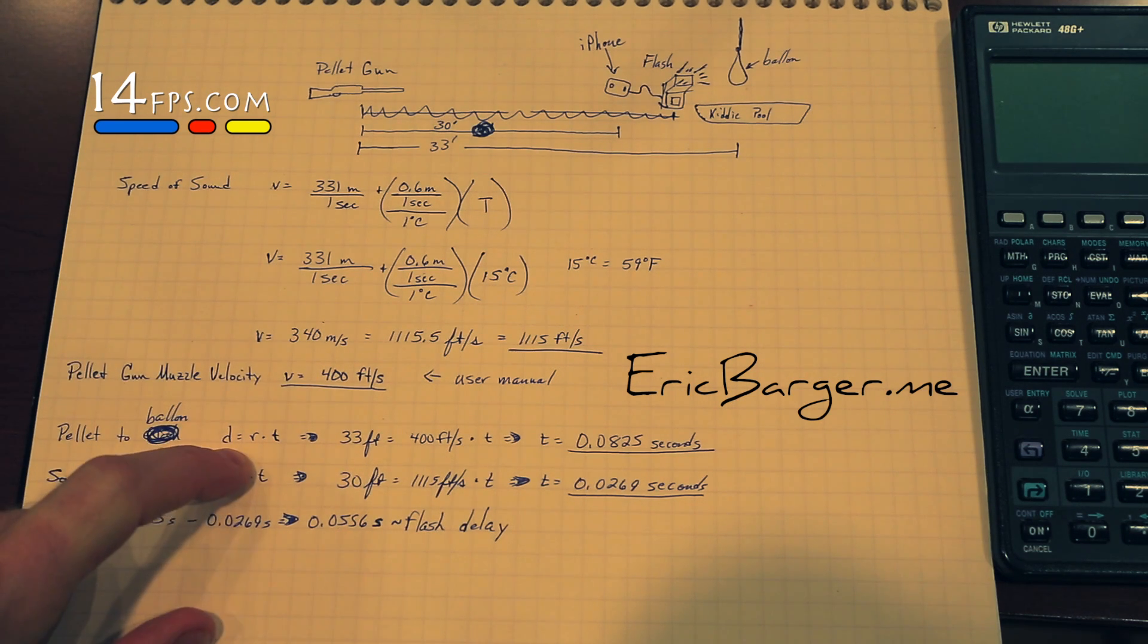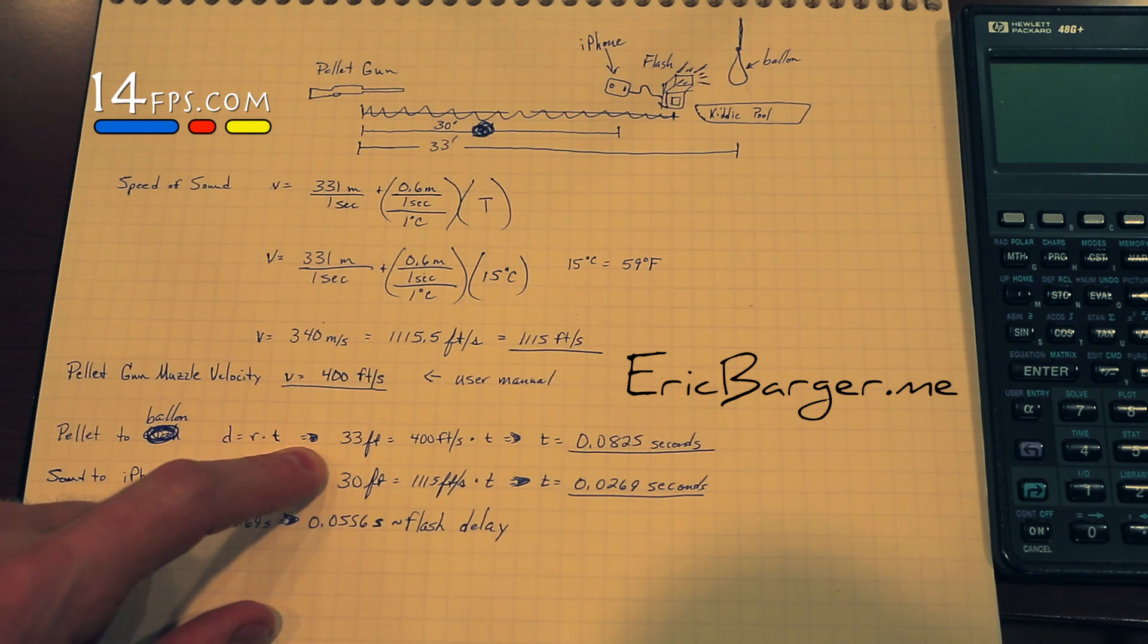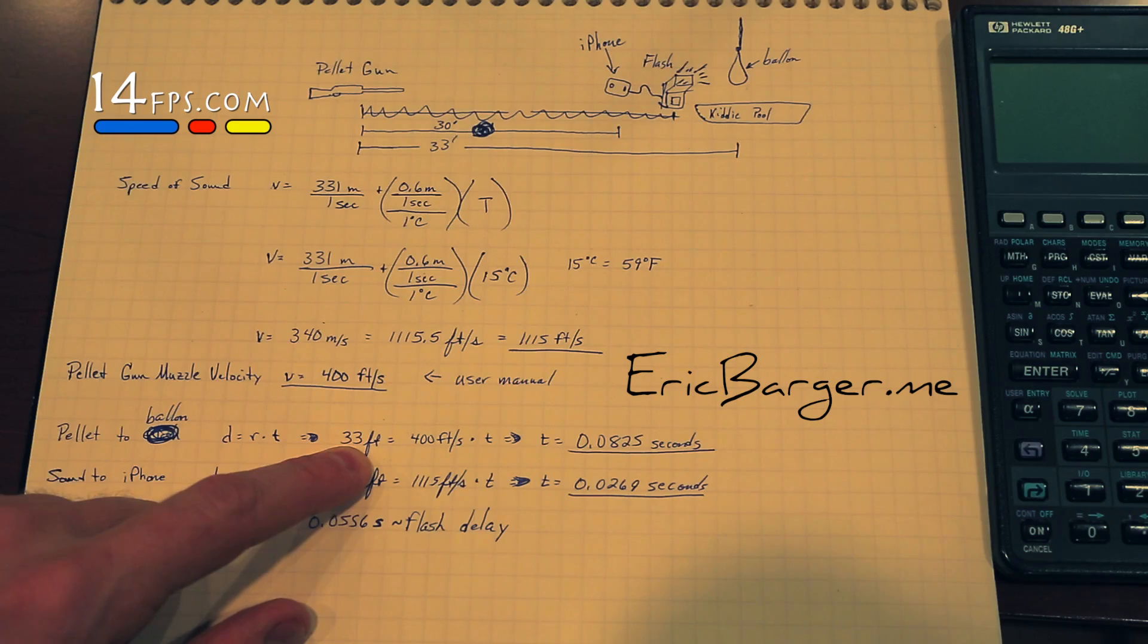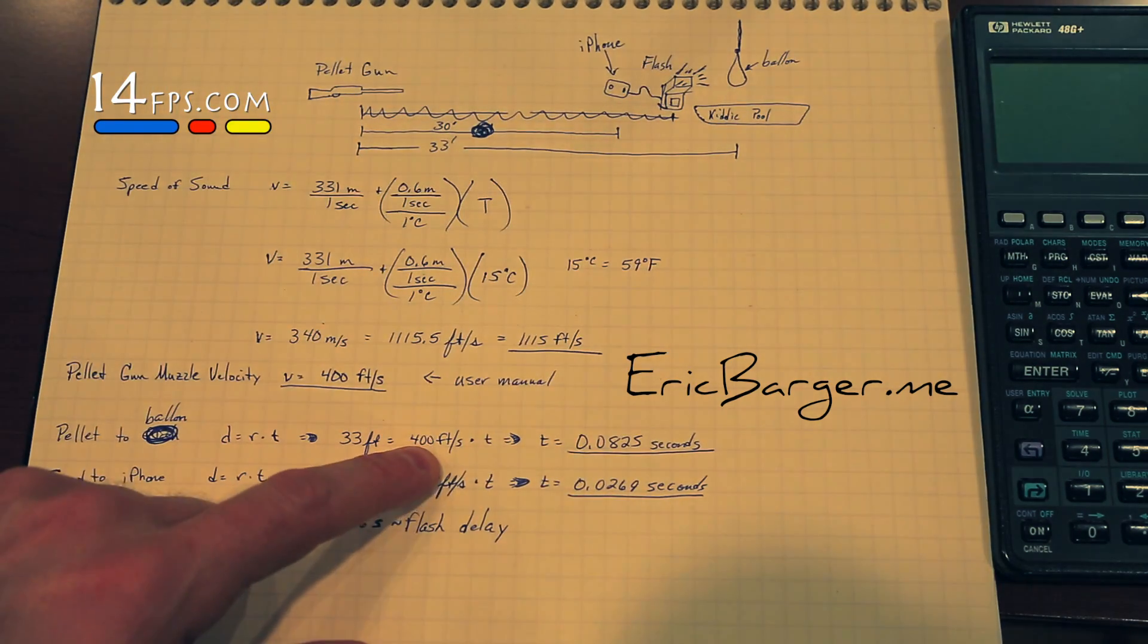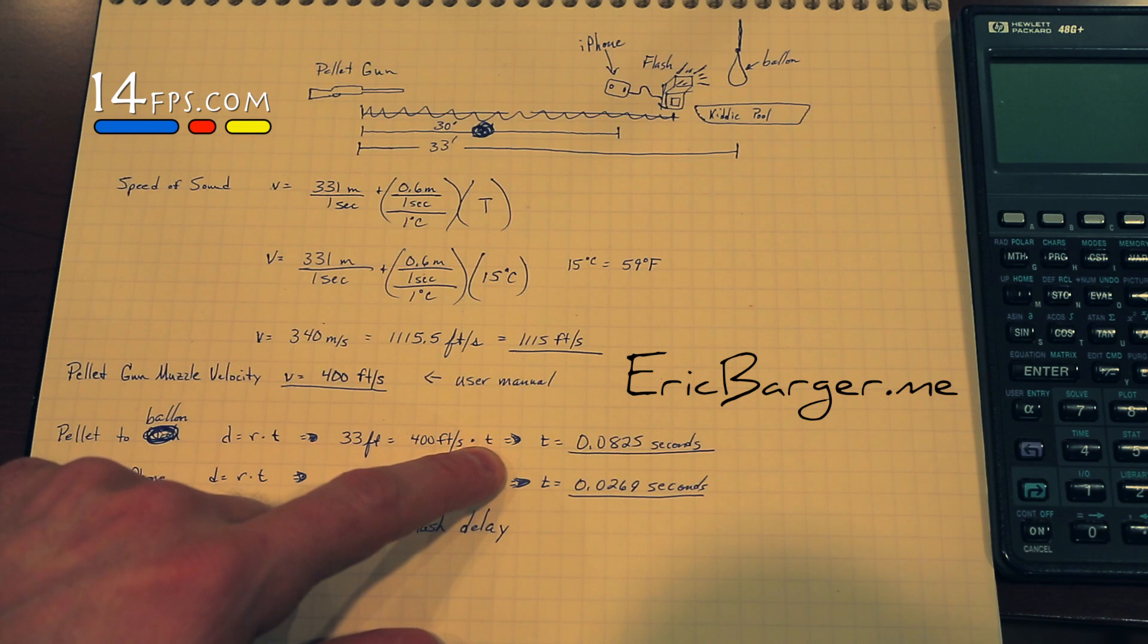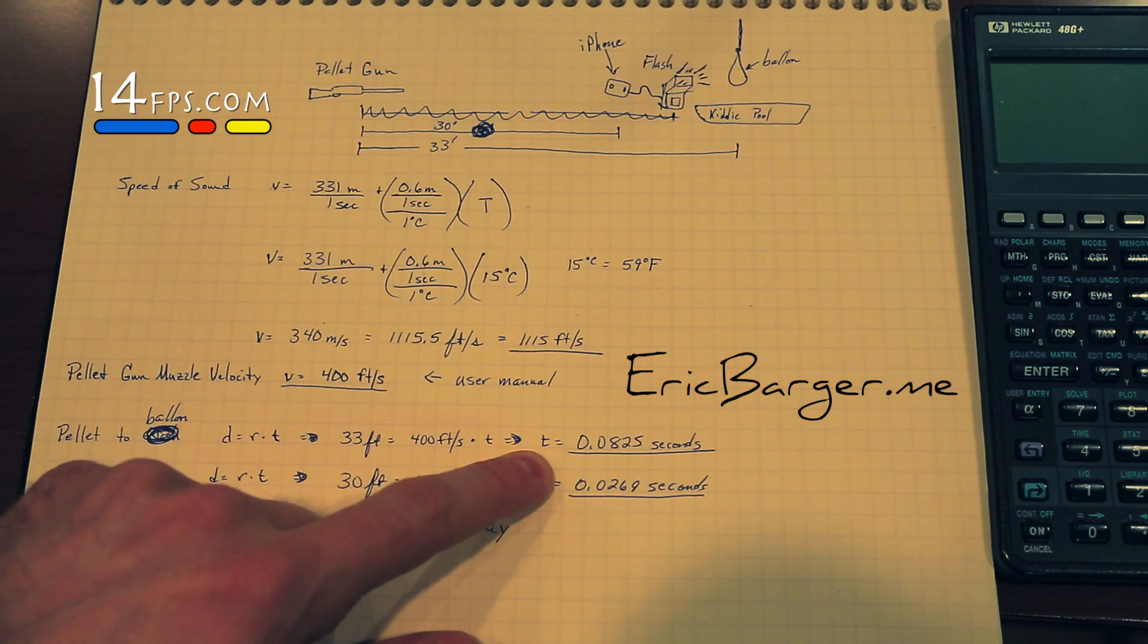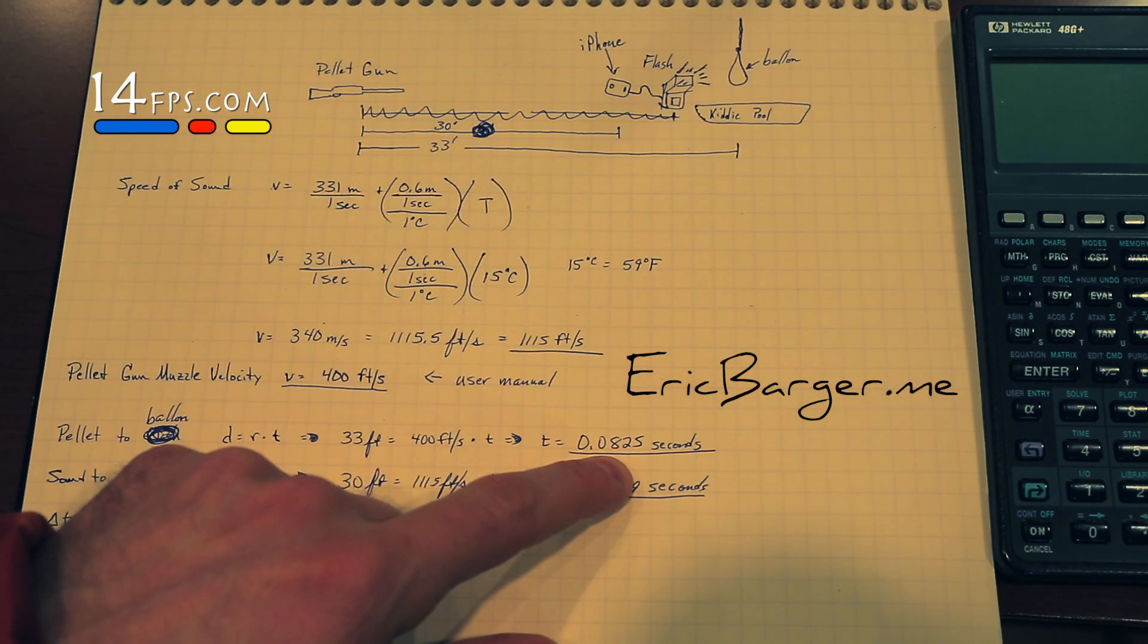So pellet to balloon, we had to figure out how much time it would take. So we used the formula D equals RT, distance equals rate times time, something we all learned in high school, maybe earlier now. So 33 feet, pellet gun to the balloon, 33 feet equals 400 feet per second times T for time. We solved for time T equals 0.0825 seconds.